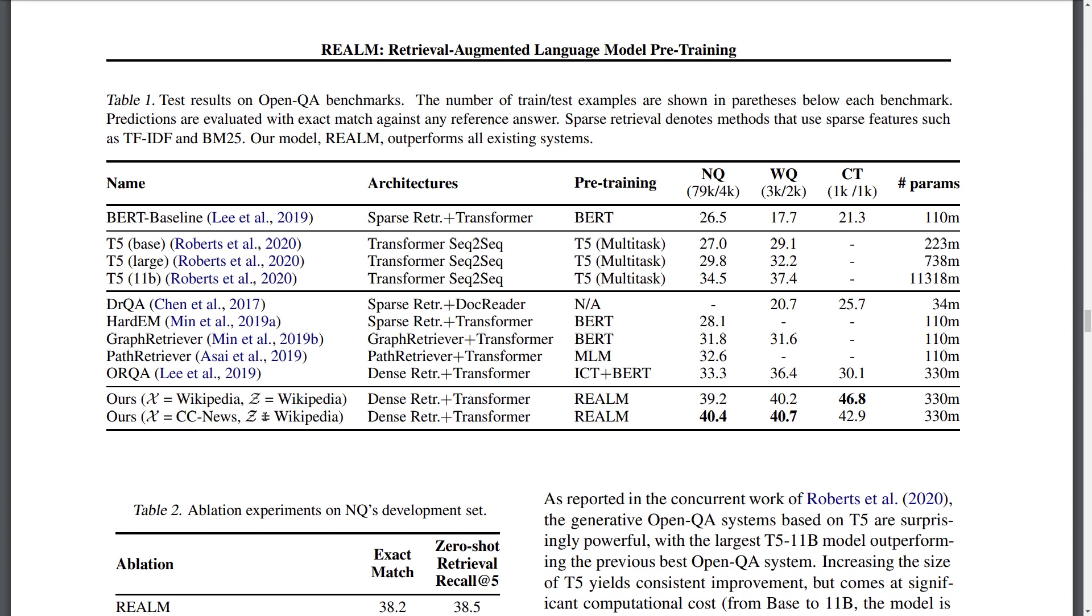And on the bottom, we have this REALM model using the whole Wikipedia as a database and different—I think those are different questions or something like that. But basically it seems that the REALM model is able to outperform all baselines across those three benchmark datasets here for open domain question answering. And yeah, achieving sometimes actually quite a nice improvement.